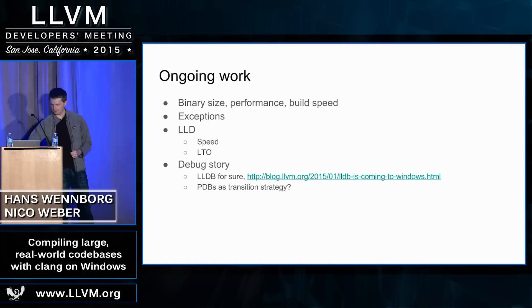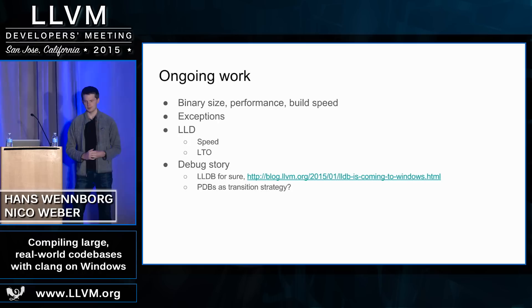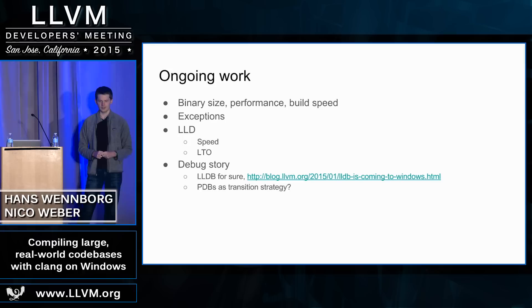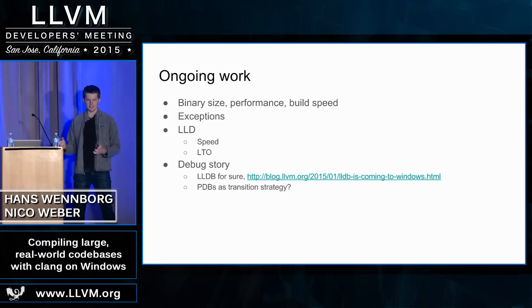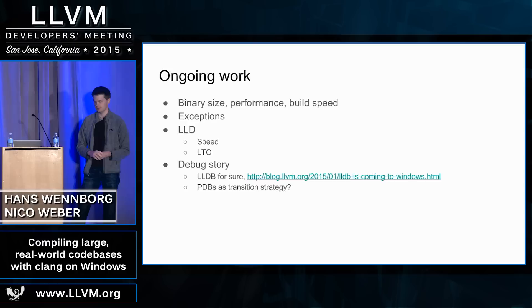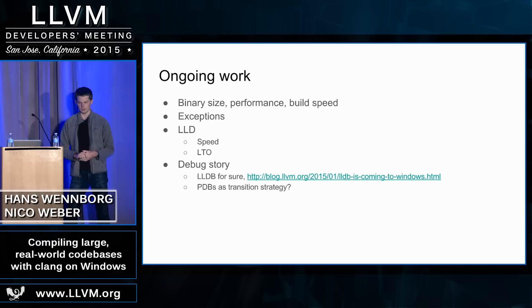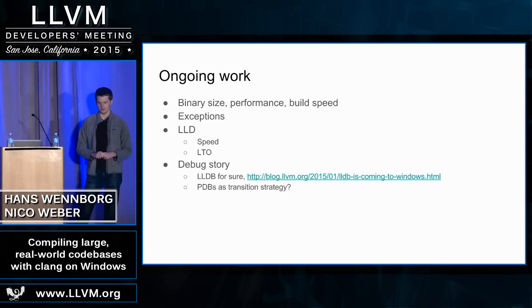There's still a huge amount of work going on. We've been focusing on correctness and haven't done much performance work yet — we want to look at binary size, performance, and build speed. There's ongoing work on exceptions; David and Reed basically have everything working but there are still some details to wrap up. There's also the LLVM linker LLD, which we're extremely excited about for both link speed, open-sourceness, and doing LTO with LLVM on Windows through that linker. There's also work needed for the debug story — we're working on LLDB on Windows, which is super exciting — and we're also curious to see what happens with PDBs on Windows.